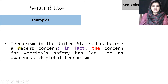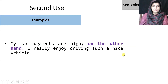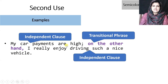Another example: 'Terrorism in the United States has become a recent concern; in fact, the concern for America's safety has led to an awareness of global terrorism.' And another: 'My car payments are high; on the other hand, I really enjoy driving such a nice vehicle.' In each case, two independent clauses are joined by a semicolon followed by a transitional phrase and a comma.